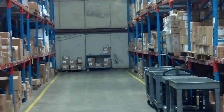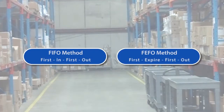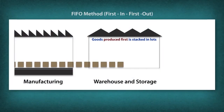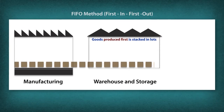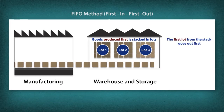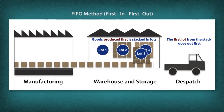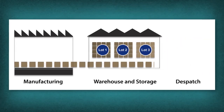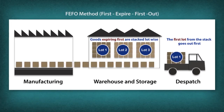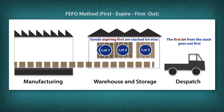Stock rotation systems like FIFO and FEFO are applied. First In First Out (FIFO) is a stock rotation system that dispatches processed food depending on the order in which it is produced. First Expired First Out (FEFO) is a stock rotation system wherein products that need to be consumed earlier are shipped first.